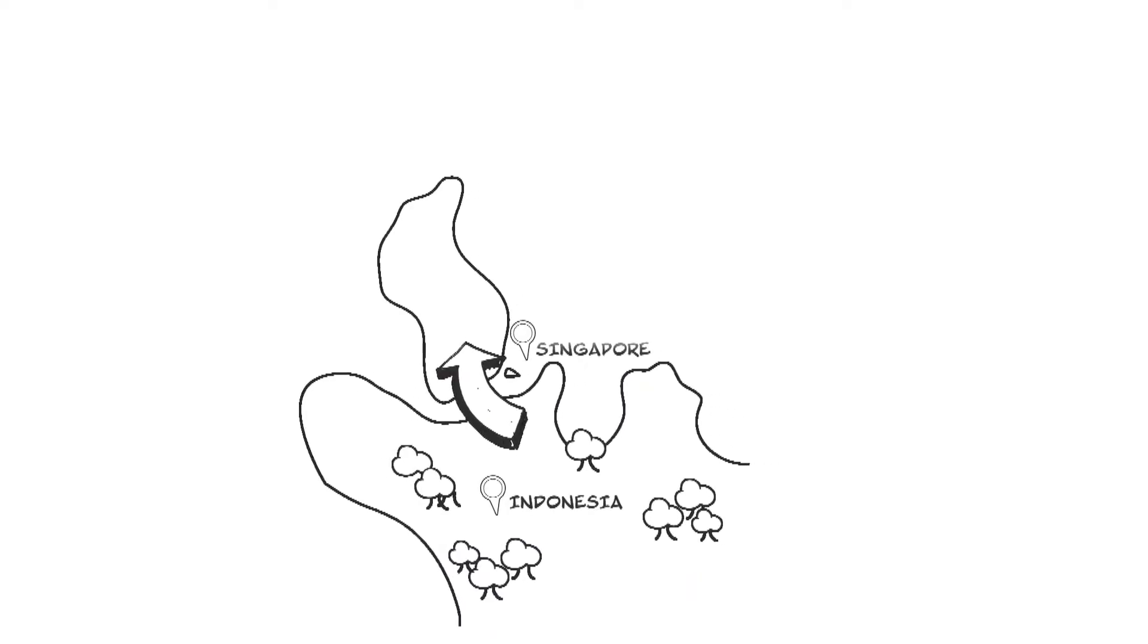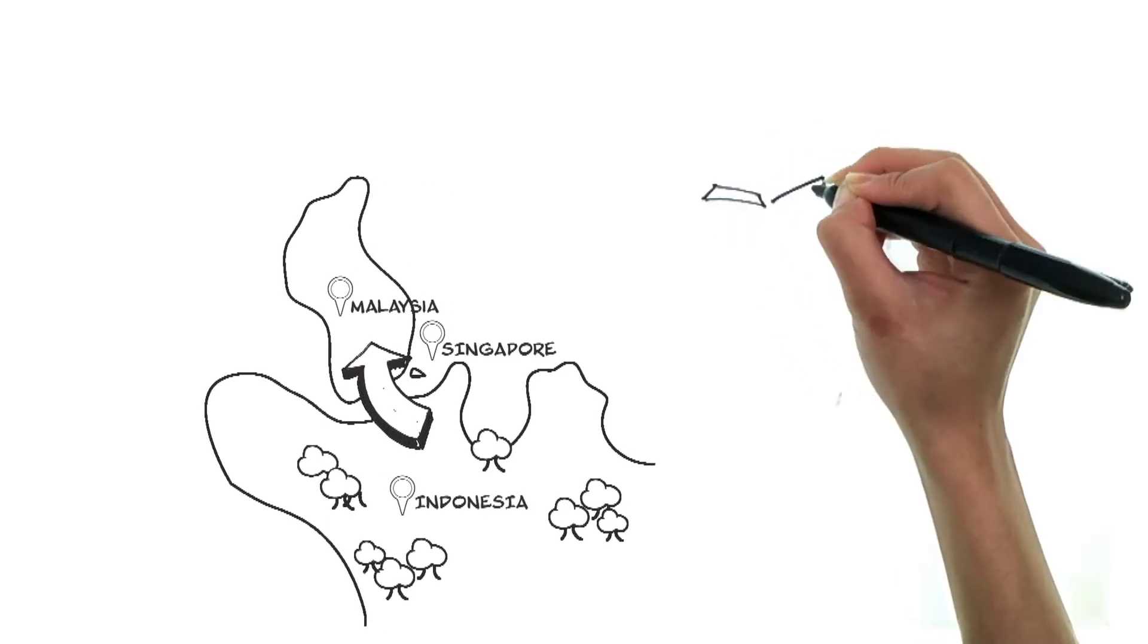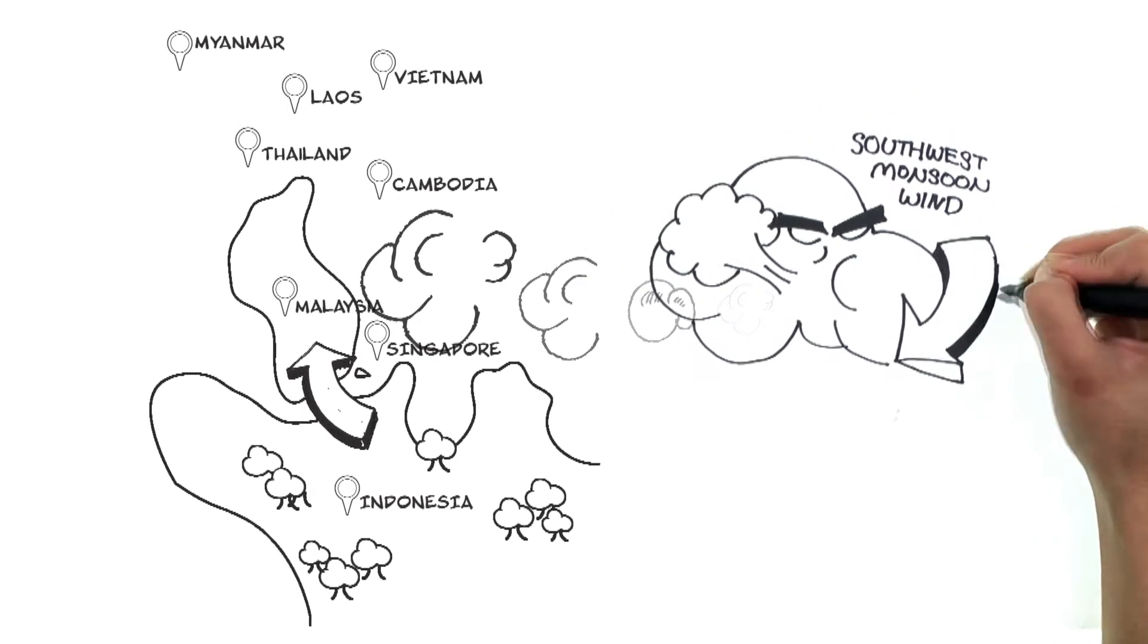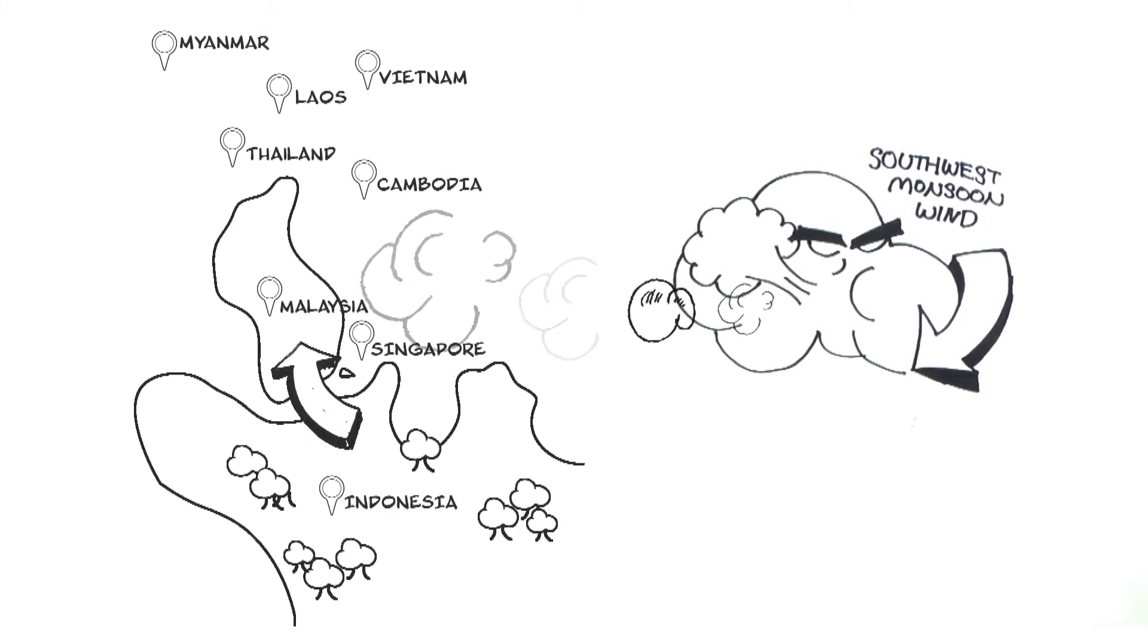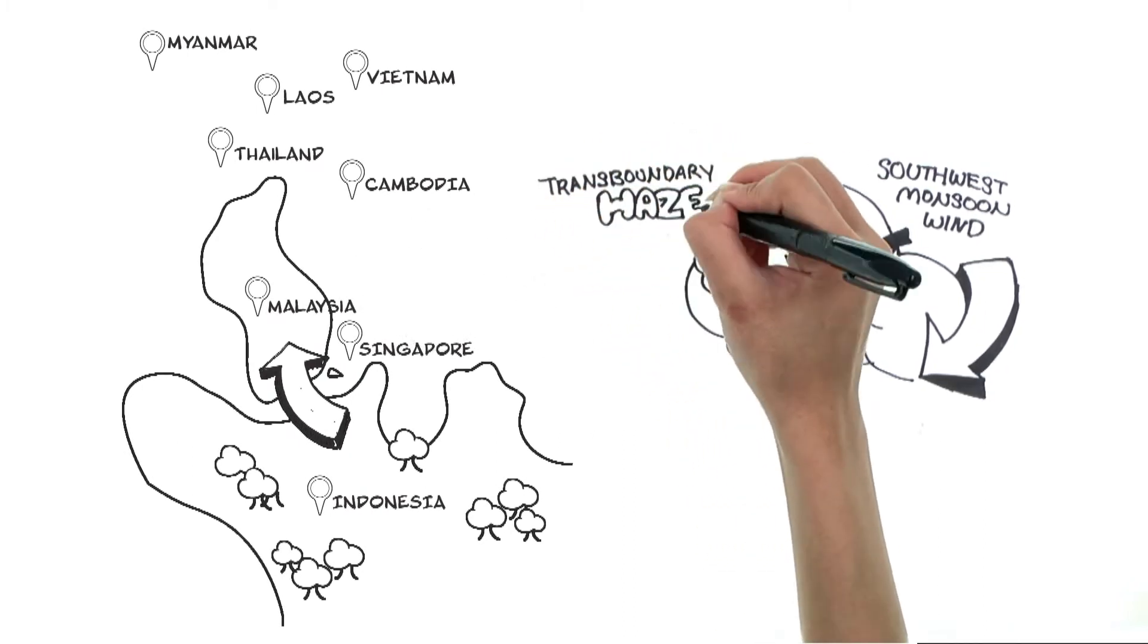But if these fires are started in another country, why does it bother us? This is because smoke from these fires is often carried by southwest monsoon winds into neighboring countries such as Singapore and Malaysia. When the haze crosses from one country to another, it is called transboundary haze pollution.